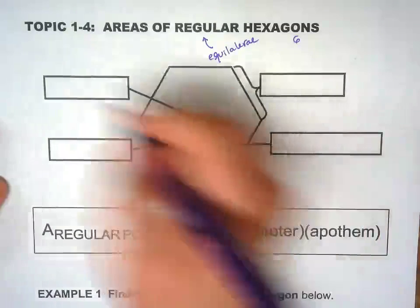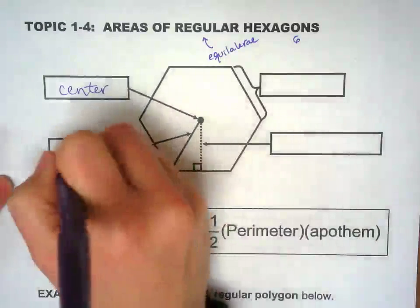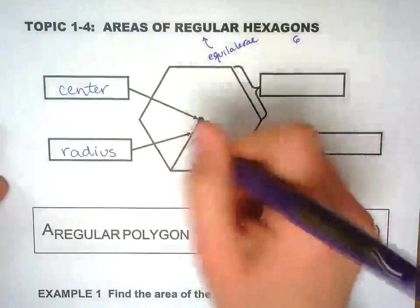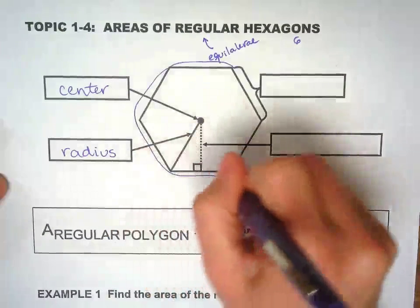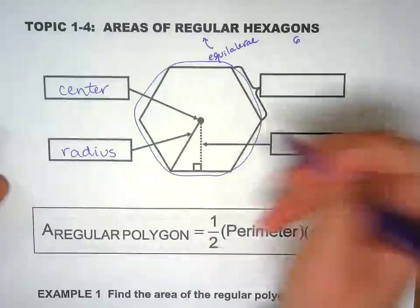So this one in the middle is the center of the hexagon. This one is the radius. The radius is if you were to draw a circle around the hexagon right there. So this would be the radius of the circle.